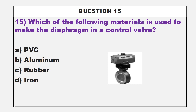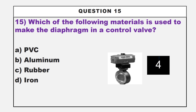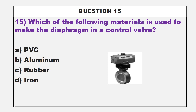We can move to our fifteenth question. Which of the following materials is used to make the diaphragm in a controller? Option A: PVC. Option B: aluminium. Option C: rubber. Option D: iron. The correct answer is option C, rubber.